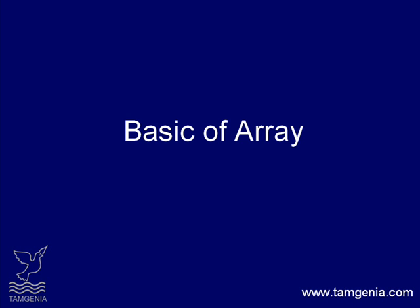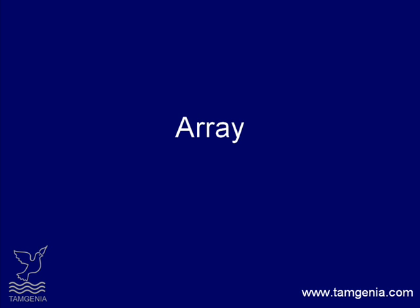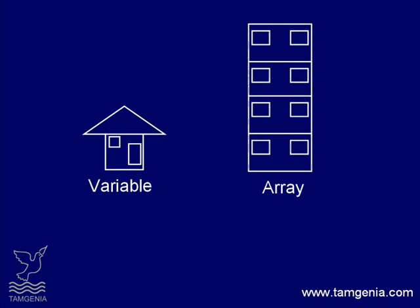Through a variable we can save only one data, but if we need to store multiple data we can use an array. So an array can be thought of as a container that has a list of storage locations for a specified data type. It is just like a big house with multiple flats, where a variable is a single home.